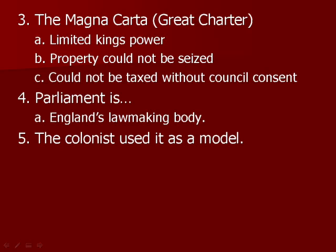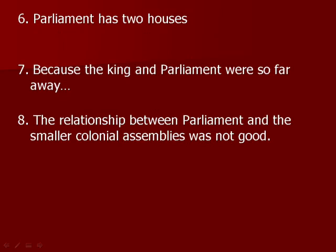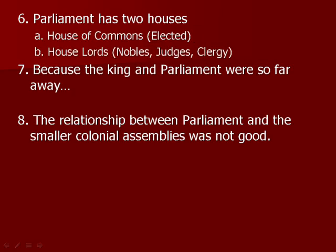Parliament strengthened rights because it is a representative form of government. The colonists used this as a model when they set up the House of Burgesses — you elect people and those people go to one central location to represent everyone. Parliament has two houses: the House of Commons, elected by the people, and the House of Lords, where membership is inherited — if your father was a duke, you become a duke.